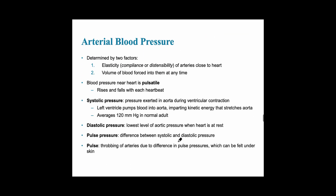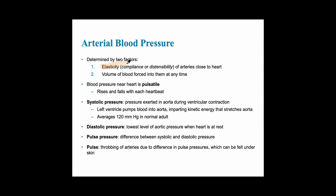Arterial blood pressure is determined by two factors. The first is elasticity — the compliance or distensibility, the ability of the blood vessel to expand. The elastic arteries are the ones closest to the heart. The second factor is the volume of blood that needs to be forced through at any one time. Blood pressure near the heart is pulsatile, meaning it causes expansion and contraction, rising and falling with each heartbeat. When you feel your carotids, you can feel that pulsatile movement of blood pressure increasing and decreasing.